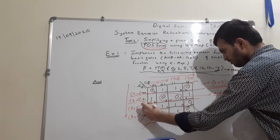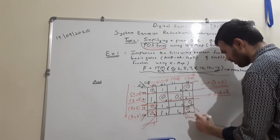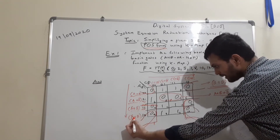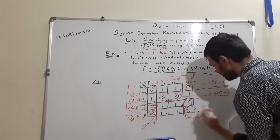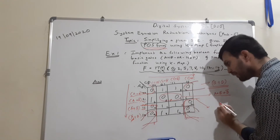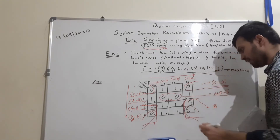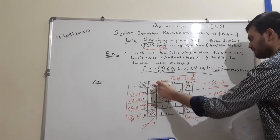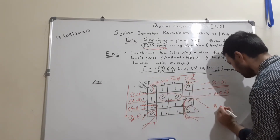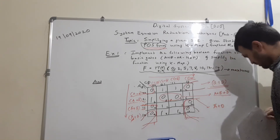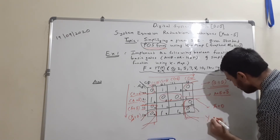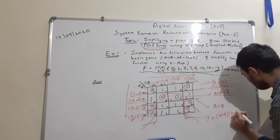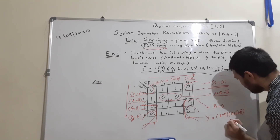One more quad is formed between max terms 8, 10, 12, and 14. Here, Ā+B̄ and Ā+B are present — Ā remains constant, so we write Ā. For the columns, C+D and C̄+D are present — C changes to C̄, so C is eliminated, leaving D. This quad gives the term Ā+D.